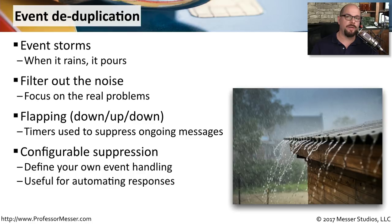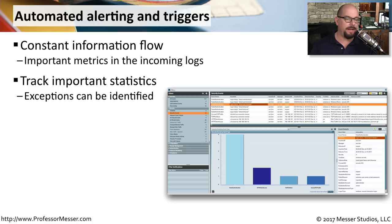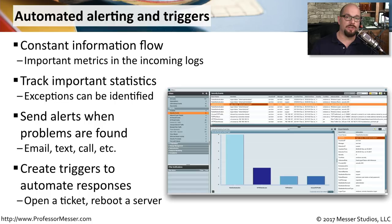Most SIEMs allow you to configure how suppression works — you can set your own timers, configure how events are handled, and set it up to work best for your environment. Once your SIEM is configured with plenty of drive space and all devices sending log information via syslog, you'll have a constant flow of information. You can track important statistics with graphs, mark exceptions, and many SIEMs also automate functions — such as receiving an alert and then opening a ticket, deleting temporary files, or rebooting a device.